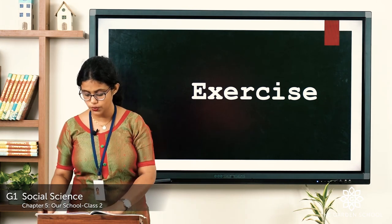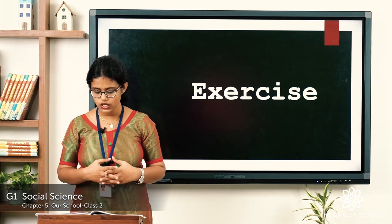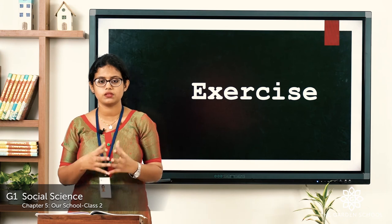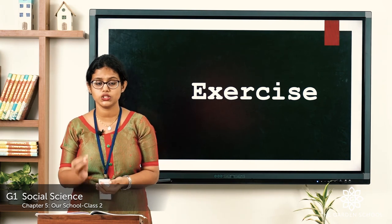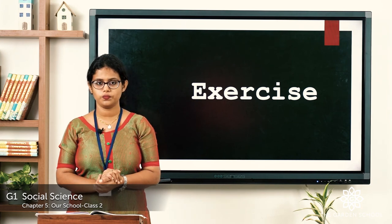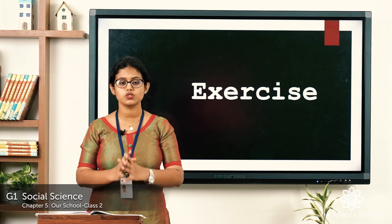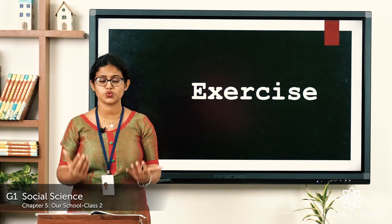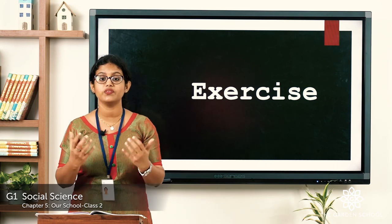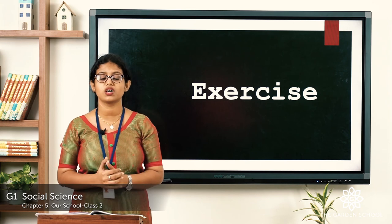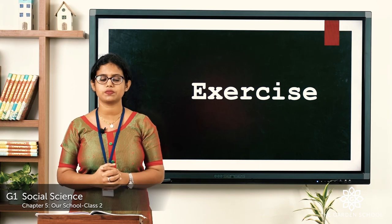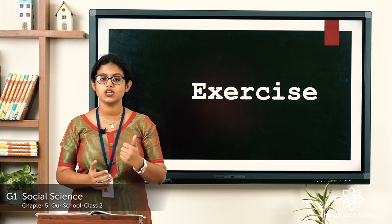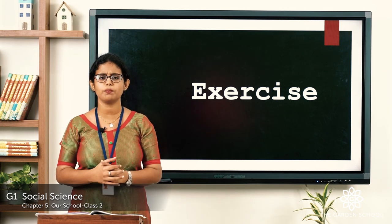Now take page number 29 in your textbook. There is a small question: name one thing you like about your school. Write one thing that you like. I hope you understood this chapter — it was all about our school. We go to school to learn many things: to read, to write, and to be a good child. Read the chapter one or two times. We'll meet in the next class with a new topic. Thank you.